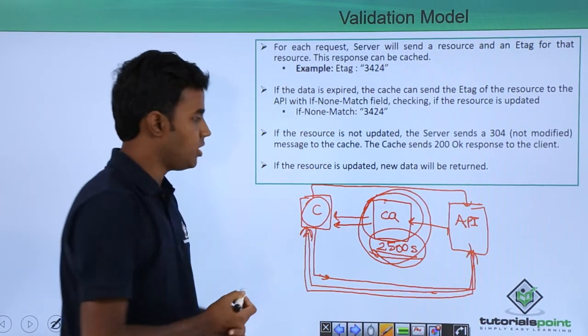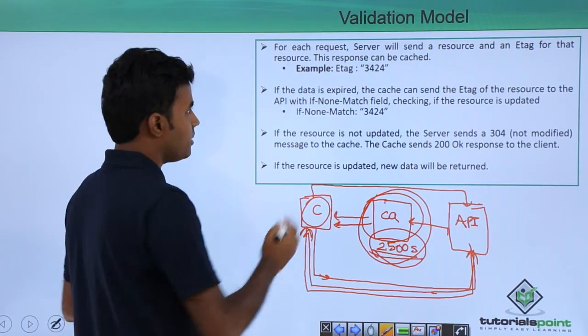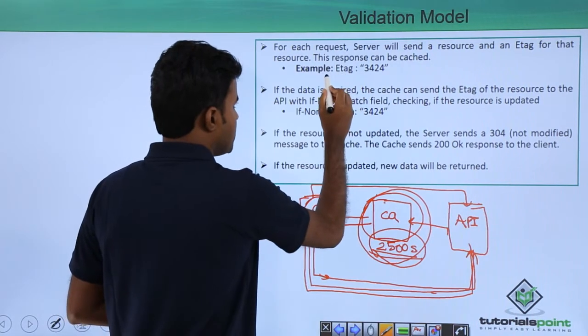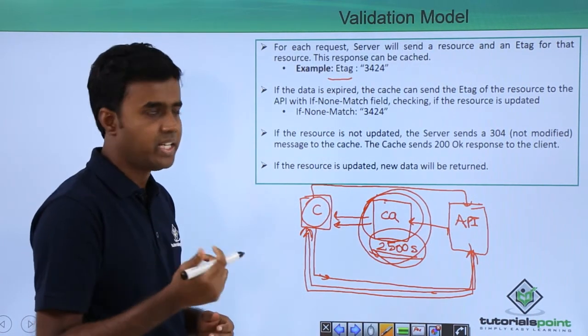So this is a huge waste of network bandwidth. So to overcome this, the validation model specifies that the server sets something called an e-tag.